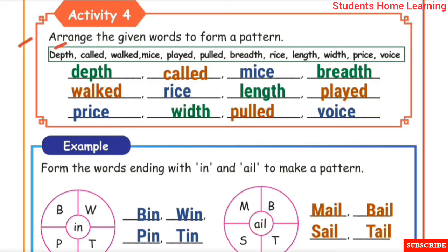The words given are: depth, called, walked, might, mice, played, pulled, breath, rise, length, width, price, voice. Observe the words and find the repeating last two letters to form a pattern.